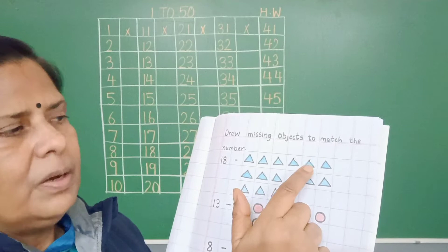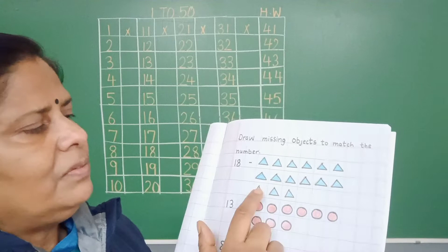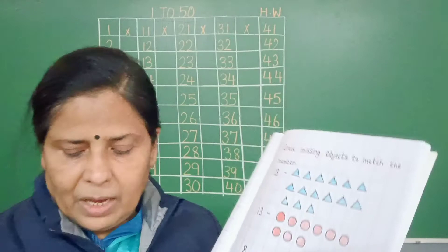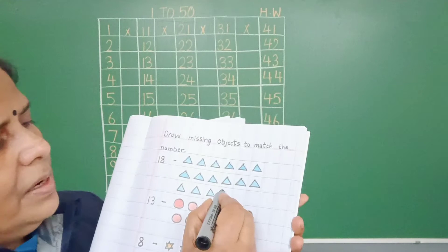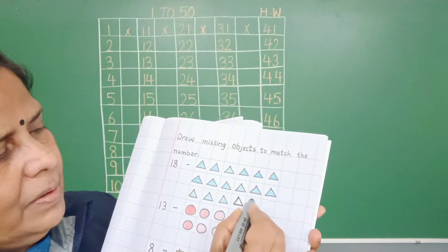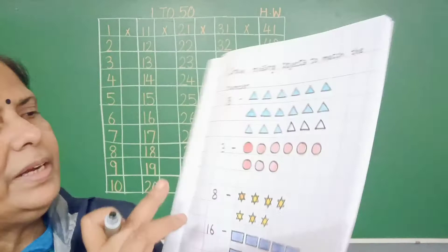These triangles are 3, 4, 5, 6, 7, 8, 9, 10, 11, 12, 13, 14, 15. Okay? Number 18 is there. Triangles are only 15. So what do we need to do? Draw triangles. 15, what is the number? 16, 17, and 18. So how many do we need to draw? Three triangles more.